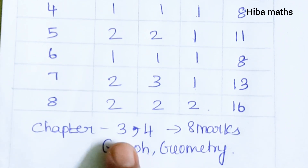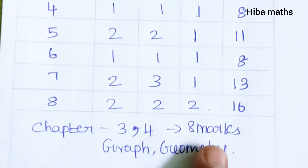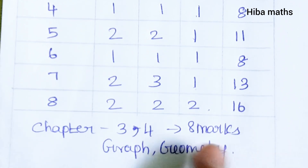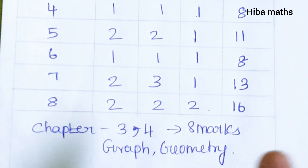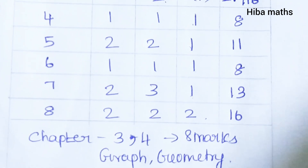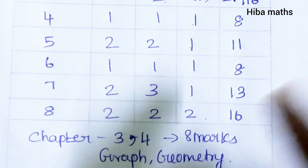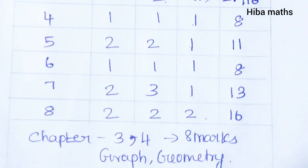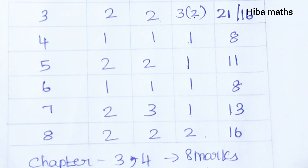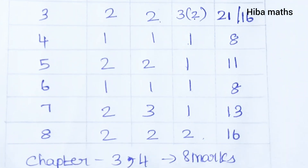In chapters 3 and 4, there are 8 marks covering graph and geometry. This is the weightage. If you look at graph and geometry, you will see key words. This covers 2-mark and 5-mark questions.